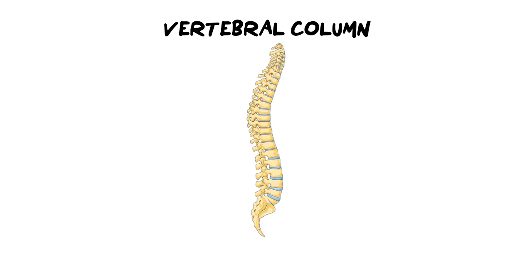Moving on to the vertebral column. The vertebral column is divided into five major regions, starting off with the first seven sets of bones at the very top, which are the cervical bones — labelled C1 to C7. Then beyond that we have the thoracic bones, and there are about 12 of them, numbered one to twelve.